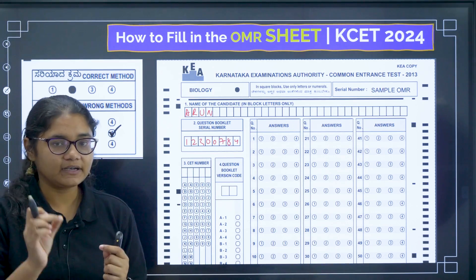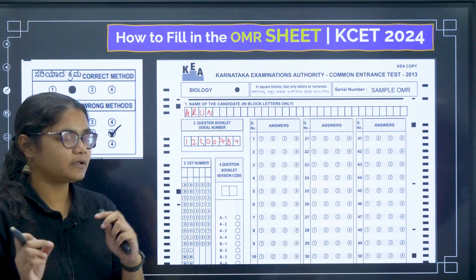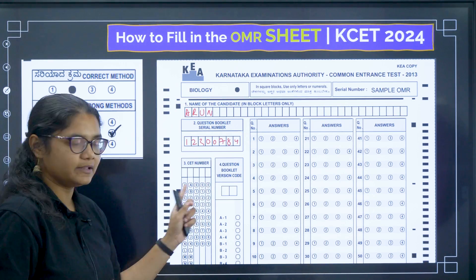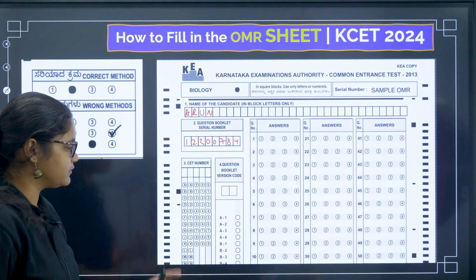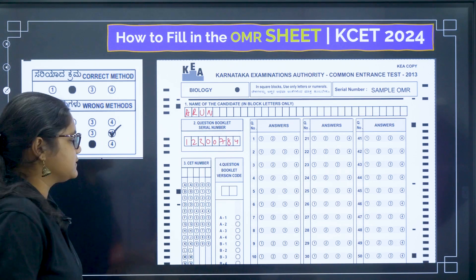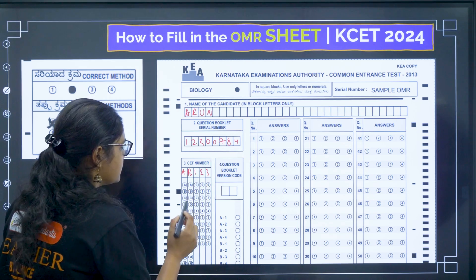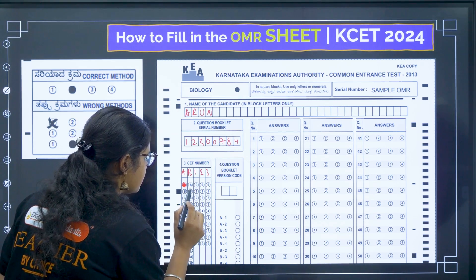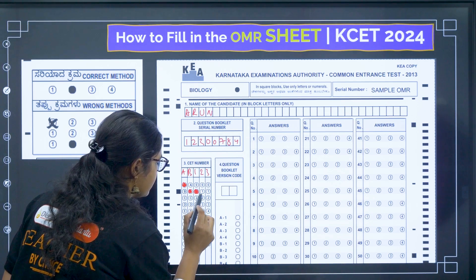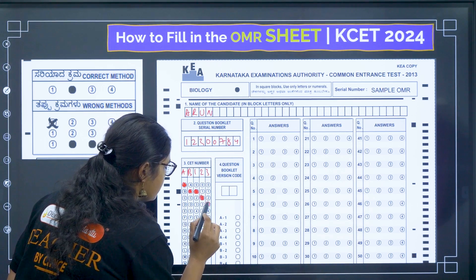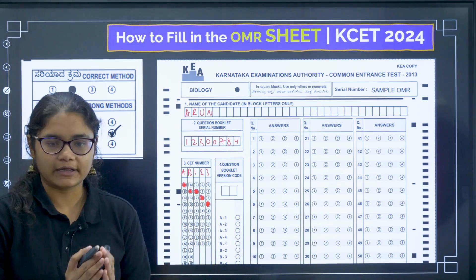The next segment is your CT number, which is present in your admit card. Check it and write it in the box. You not only have to write the CT number but also bubble — circle — the corresponding bubbles in the column. For example, if the CT number is AB123, circle A, then B, then 1, 2, and 3 in the respective columns. It is very important that you bubble it correctly.